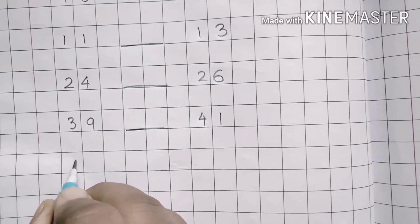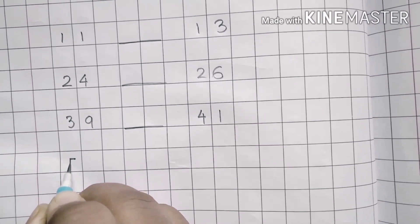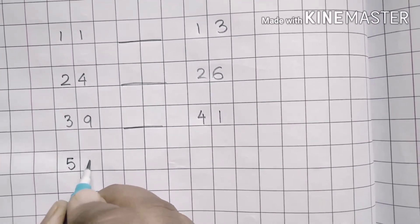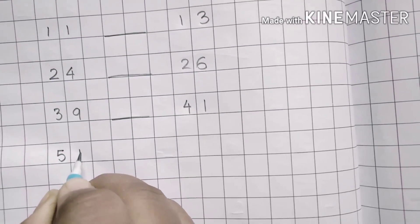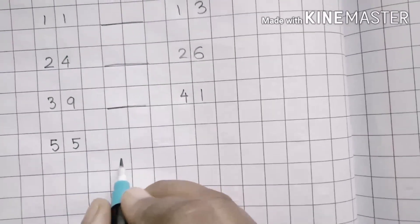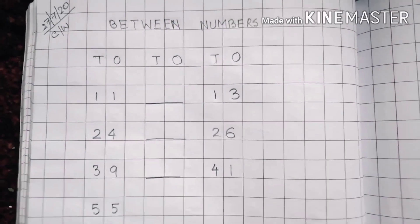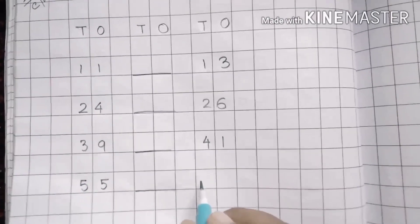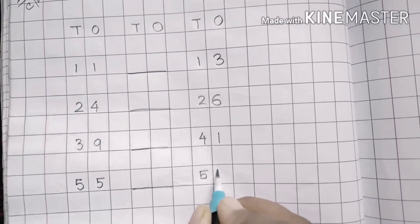Then write here 5, 5 in the tens which means 55. Give a dash, then write here 5, 7 - 57.